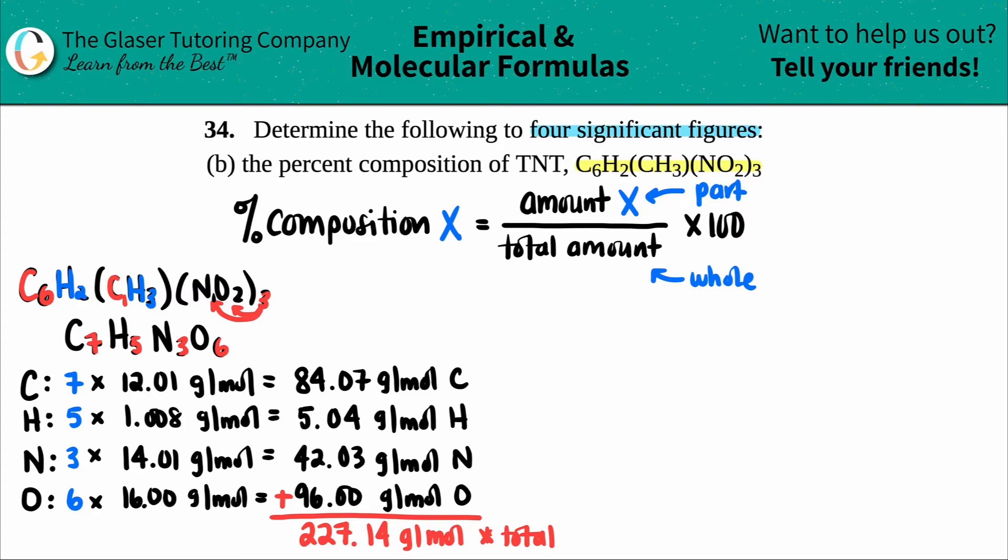Now we just have to find the percent composition for all four of these elements. So let's start from the top and work our way down. So the percent of carbon would be part divided by whole. The amount, the total amount of carbon, we already said it was this number, 84.07. So it would be 84.07 divided by the total amount, and that's the molar mass of the whole compound, 227.14. And then all I got to do is just times by 100.